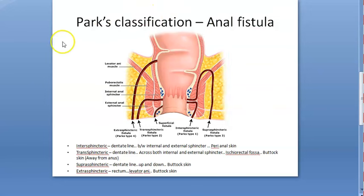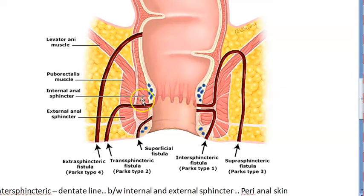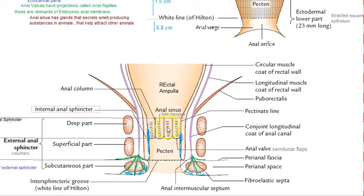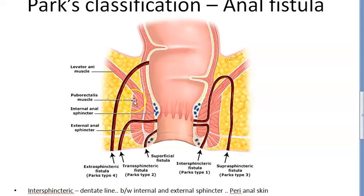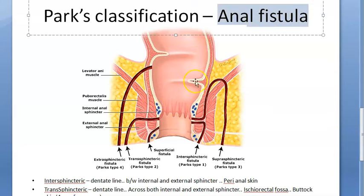The anus has sphincters — the internal anal sphincter and the external anal sphincter outside of it. Two sphincters are present: internal and external. The rectum connects the colon to the anus. Inside the anus you can see the pectinate line, anal sinus, and anal columns. The area inside is called the pecten. With this anatomy understood, Parks' classification becomes very easy.